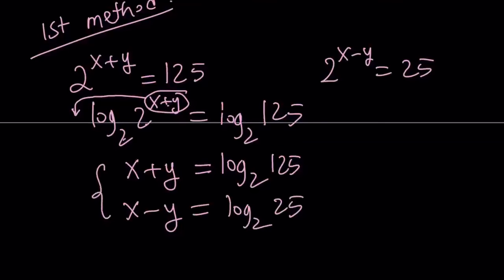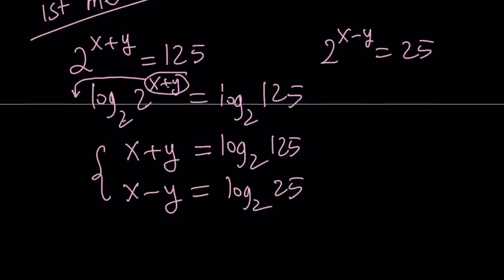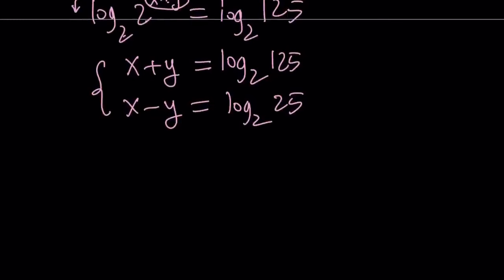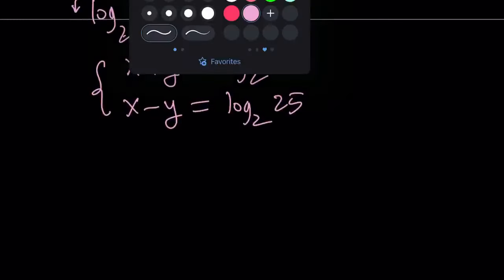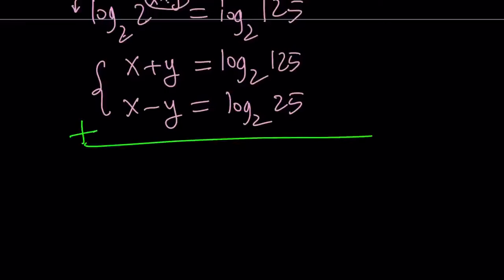Now what did I get from here? I got a system. What can I do with it? I can solve it. Elimination. I can add these two equations. That's going to eliminate the y, giving us 2x equals log 125 plus log 25, both in base 2.